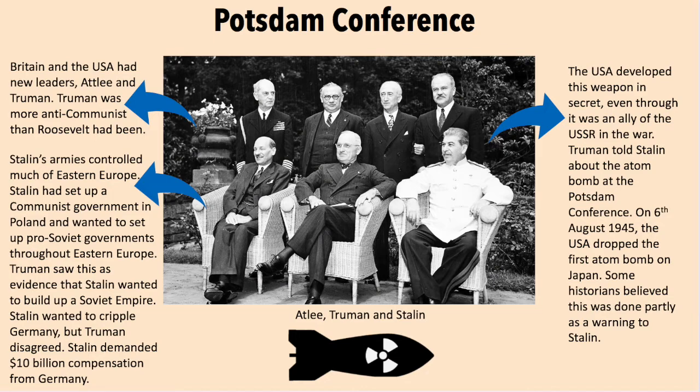At the Potsdam Conference, Britain and the USA had new leaders: Atlee and Truman. Truman was more anti-communist than Roosevelt had been. Stalin's armies controlled much of Eastern Europe. Stalin had set up a communist government in Poland and wanted to set up a pro-Soviet government throughout Eastern Europe. Truman saw this as evidence that Stalin wanted to build a Soviet empire. Stalin wanted to cripple Germany but Truman disagreed.